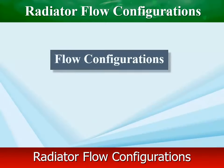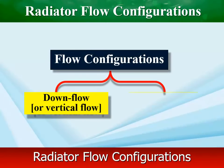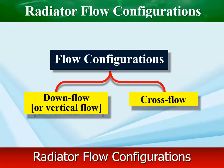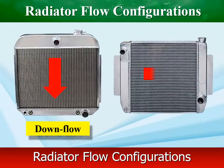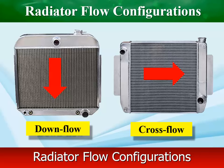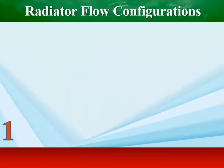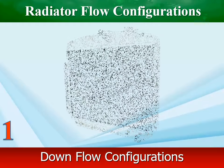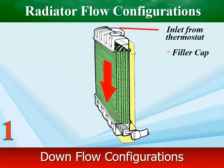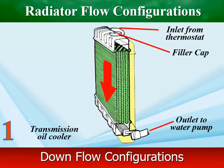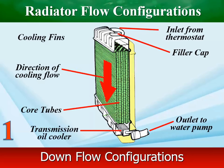There are two main styles of radiators used in conventional passenger cars: cross-flow and down-flow. The terms refer to the direction of coolant flow through the radiator. In the down-flow radiator design, the tanks are located at the top and bottom of the core, with coolant tubes running vertically between the two tanks. This design was used mostly in older vehicles.